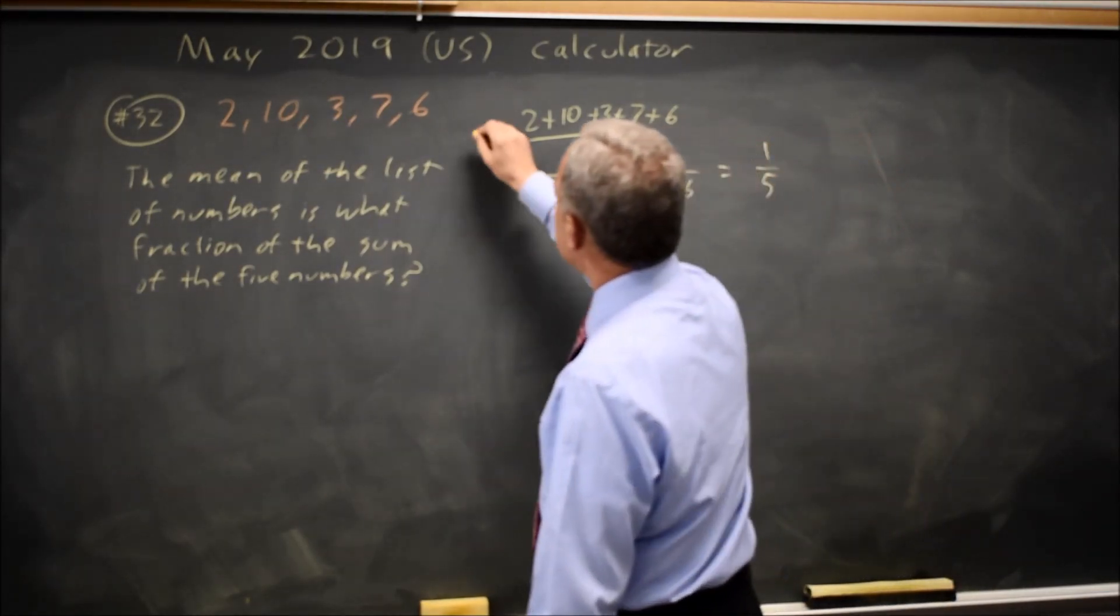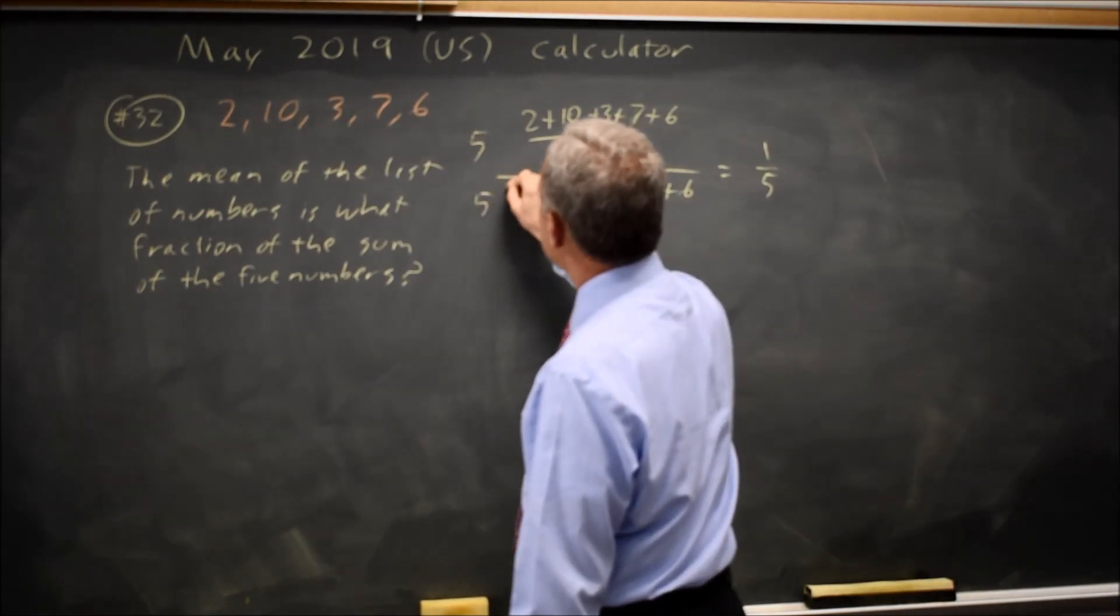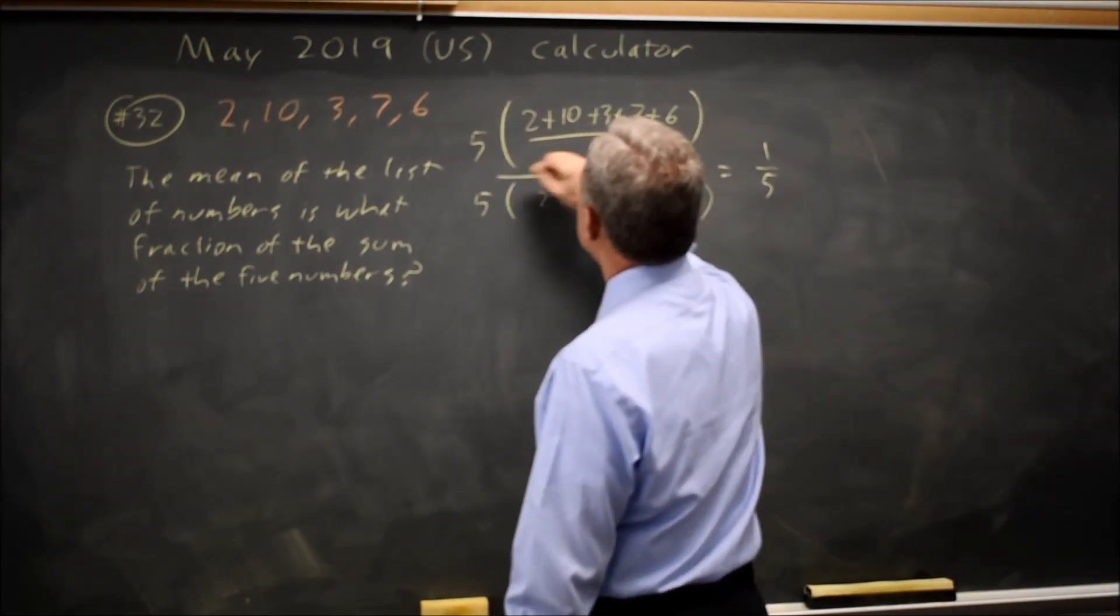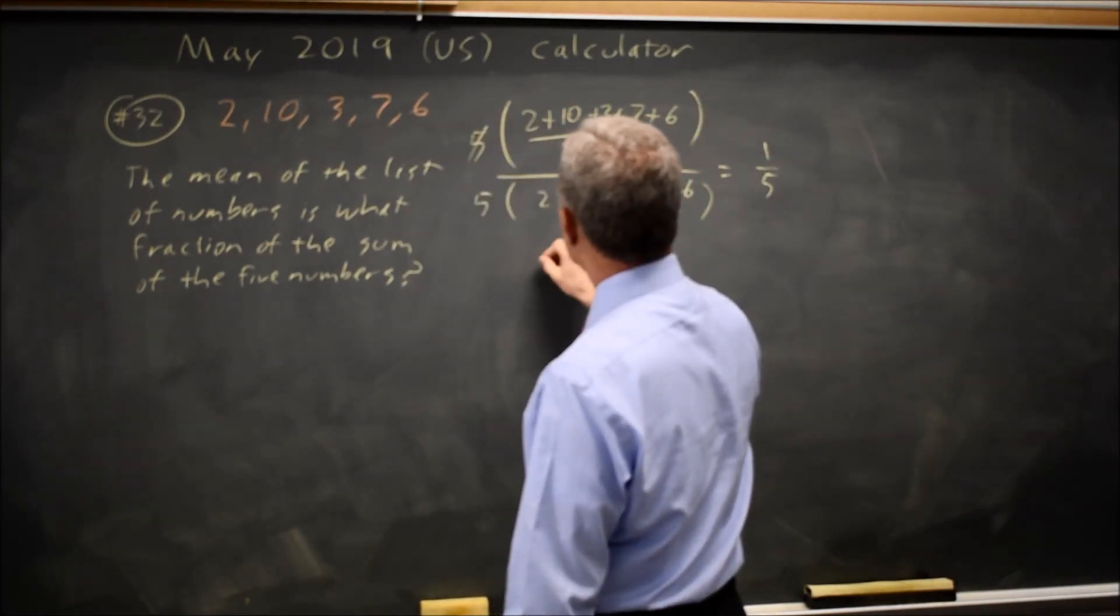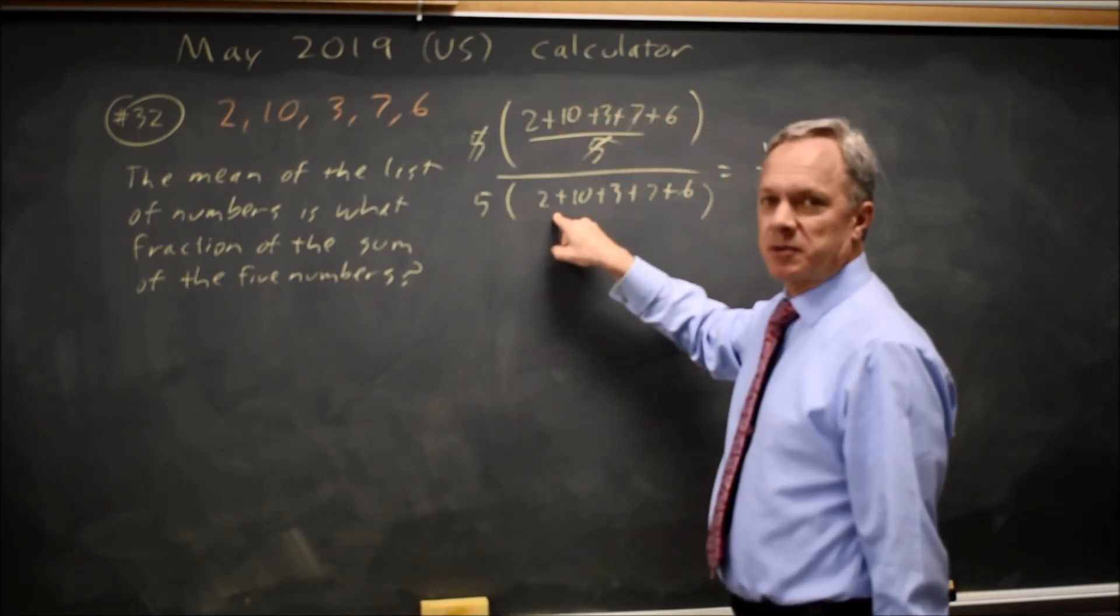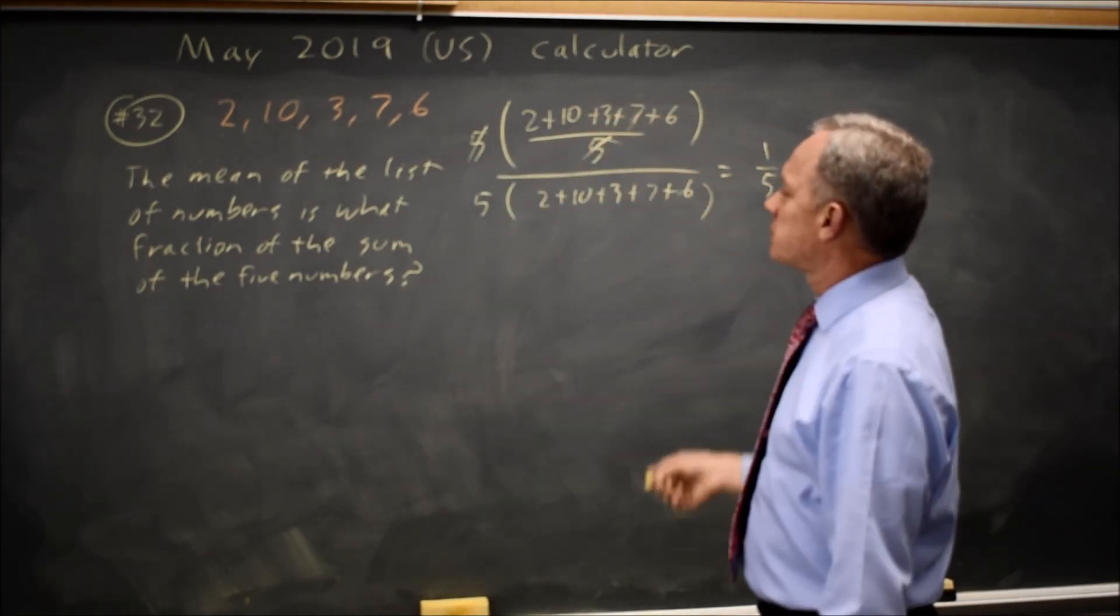One quick way of seeing that is multiply the numerator and denominator by 5. These 5's cancel and you're left with this sum over 5 times the same sum, which simplifies to 1 over 5.